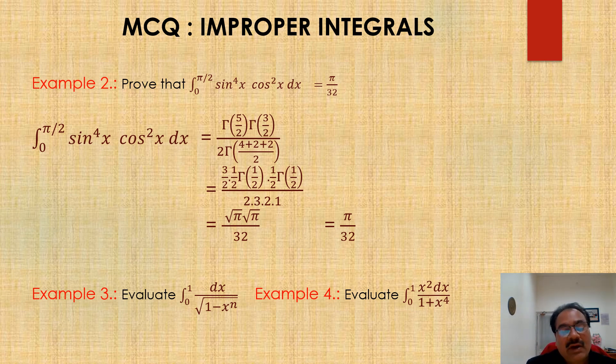And if you will apply the formula, then you will get this answer: gamma 5 by 2, gamma 3 by 2, 2 gamma 4 plus 2 plus 2 by 2. And similarly, then you will write the value. So here you can write 3 by 2, 1 by 2, gamma half. And here you can write gamma half, gamma half. And 2 into 3 into 2 into 1. Gamma half is root pi root pi into root pi by 32 is pi by 32.